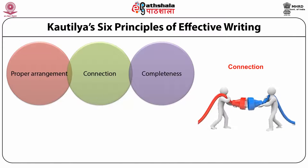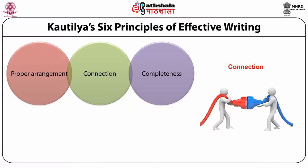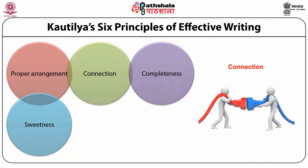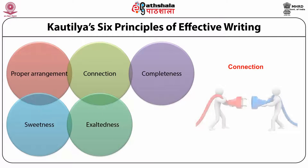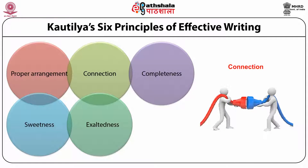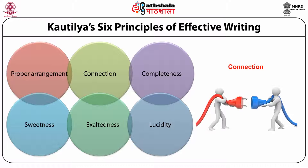Completeness implies that the message has to be precise but at the same time complete in its meaning. Whenever necessary, the matter should be explained in detail with the help of reasons, examples and illustrations. The fourth principle of effective writing is sweetness — using beautiful words and language for conveying messages. The fifth principle is exaltedness — proper use of sober language and avoiding the use of words which could be offensive. The last principle is lucidity — using expressions and words which can be understood easily by the people for whom the message is meant, to ensure easy understanding.